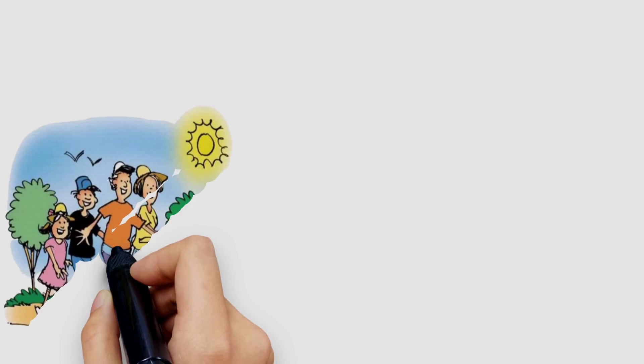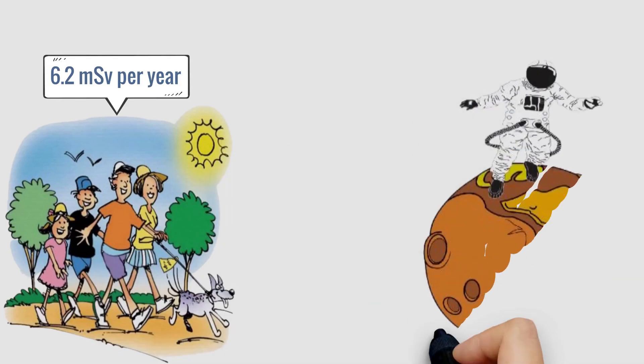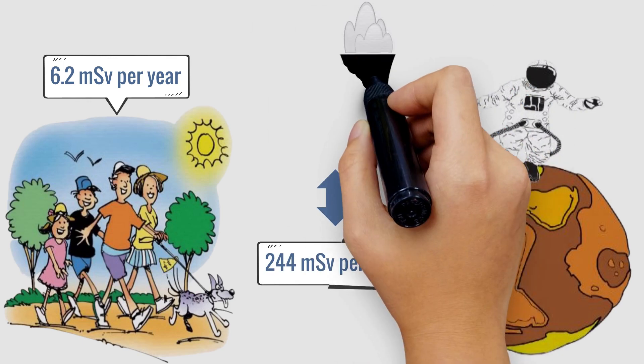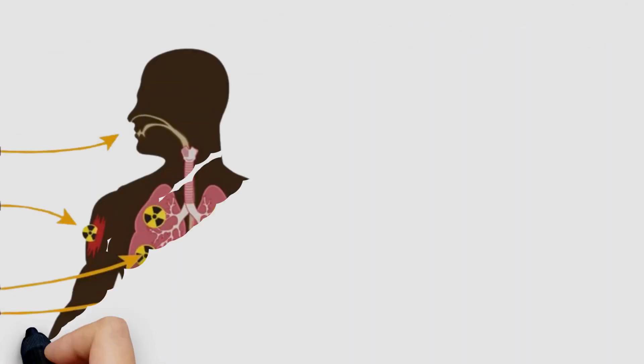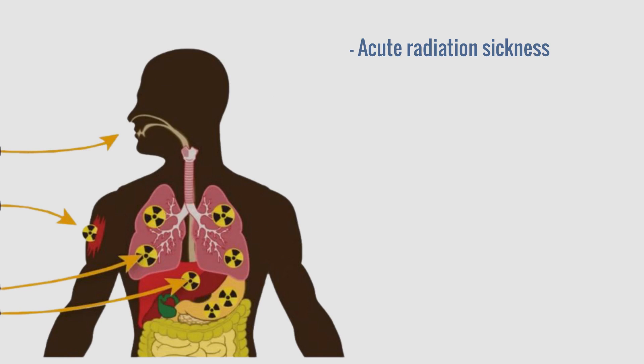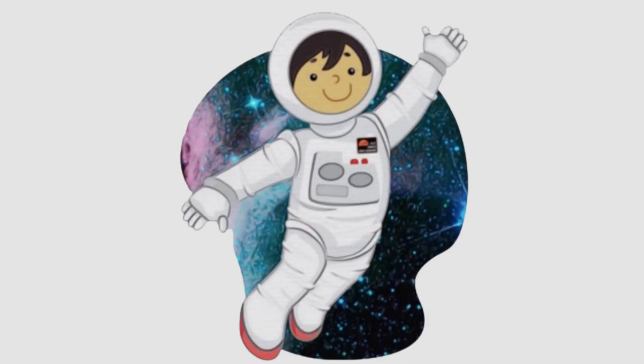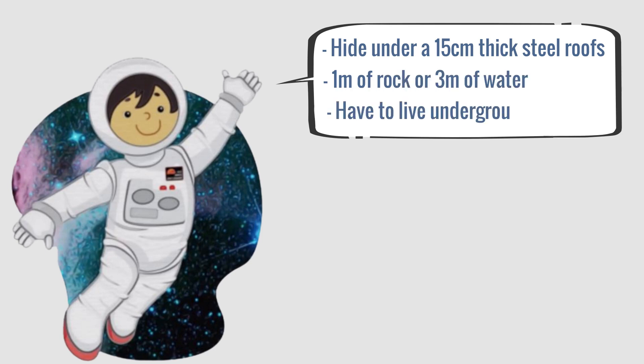On Earth, humans are normally exposed to radiation of about 6.2 msv per year, but on the surface of Mars, the amount of radiation will be 244 msv per year, about the same as a worker in a nuclear power plant. With this radiation intensity, humans are very susceptible to acute radiation sickness, cancer, genetic damage, and even death. To combat this radiation, or to have a safe environment like on the Earth's surface, we need to hide under a 15 cm thick steel roof, 1 m of rock or 3 m of water or have to live underground.